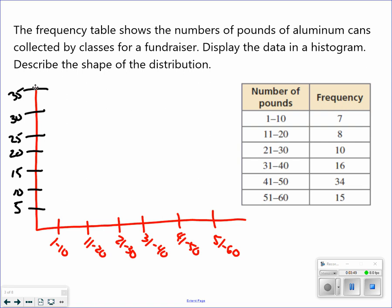Number of pounds from 1 to 10, there were 7 of those. I'm going to go up to 7 and come across here. Remember, histograms are connected. The next one, there's 8, so it's slightly higher than the last one. The next one goes up to 10. 16, all the way up to 34, and then 15.